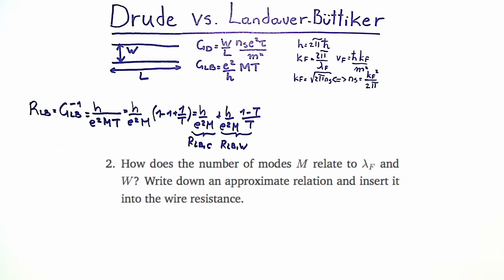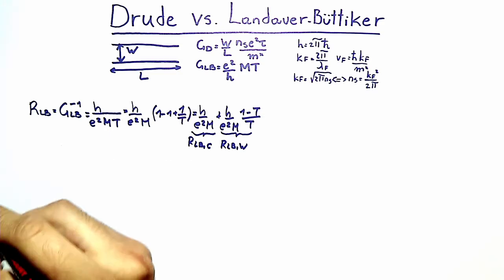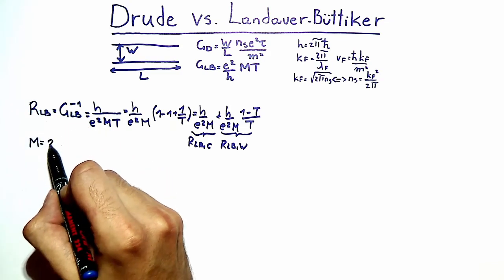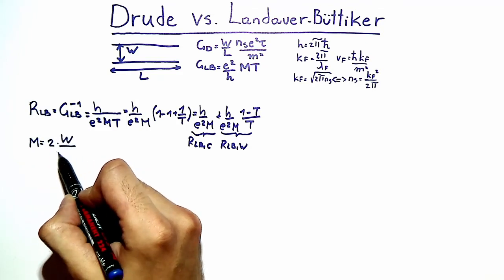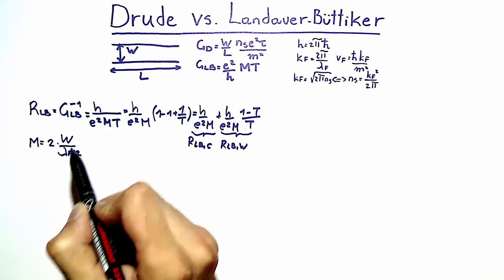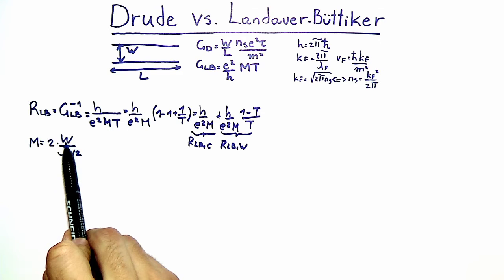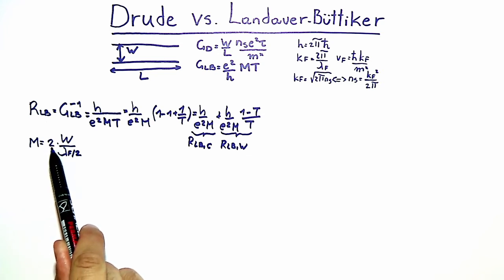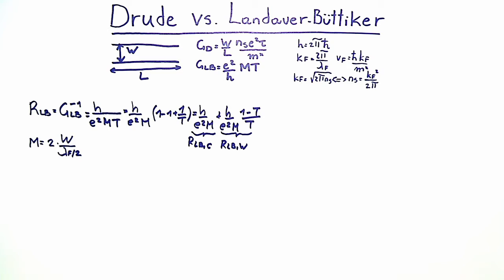Now we want to rewrite the number of modes M in the wire in terms of the wire width W and the Fermi wavelength λ_F. M equals two times the wire width divided by half the Fermi wavelength. The width divided by half the Fermi wavelength gives the number of modes, and the additional factor of 2 stems from spin degeneracy, assuming spin up and spin down are equivalent.